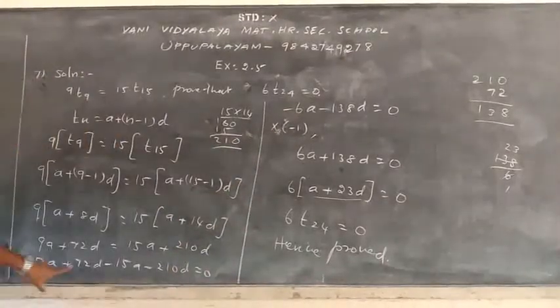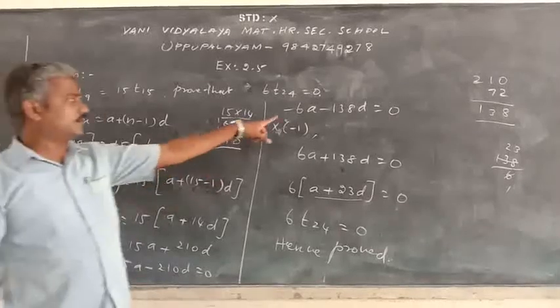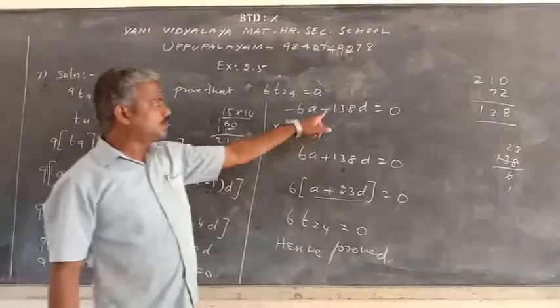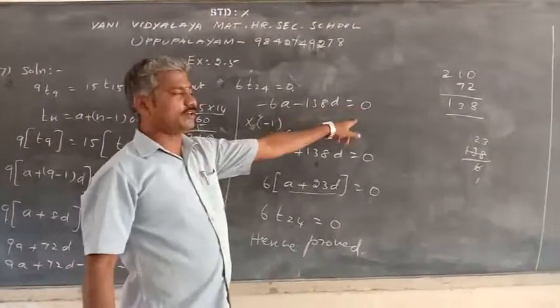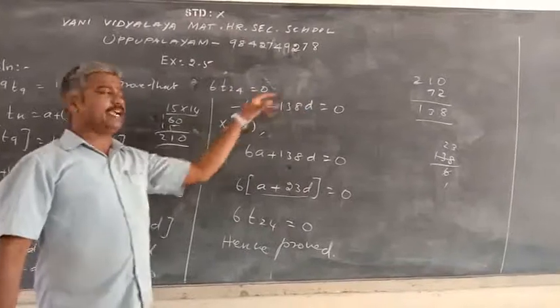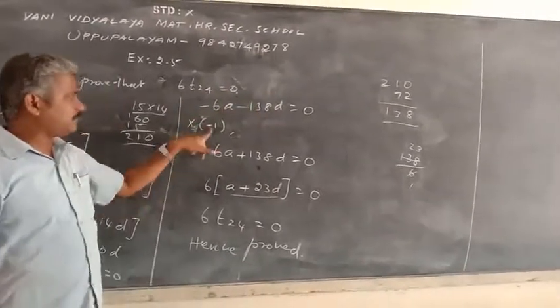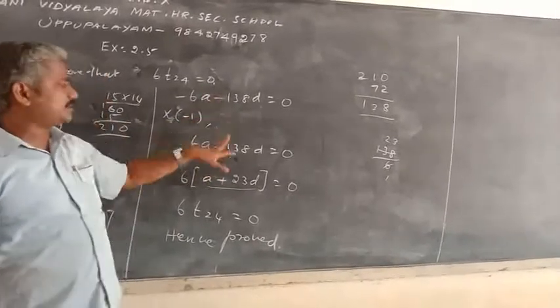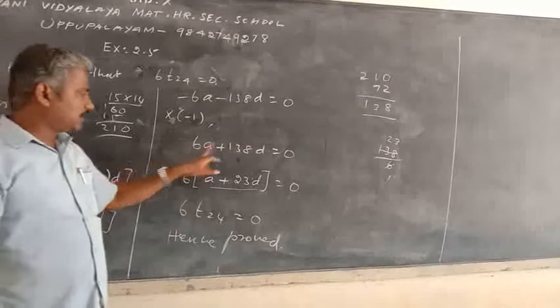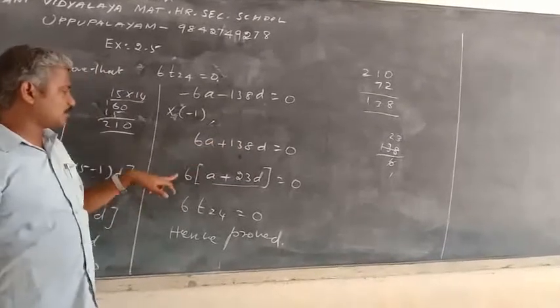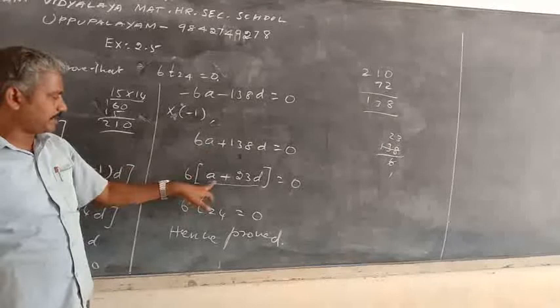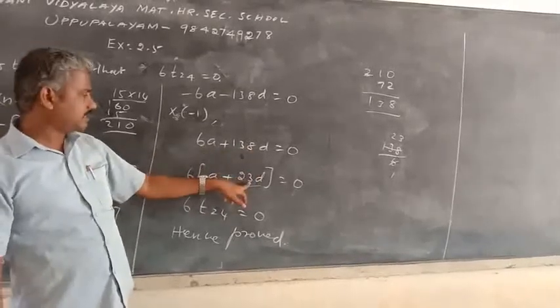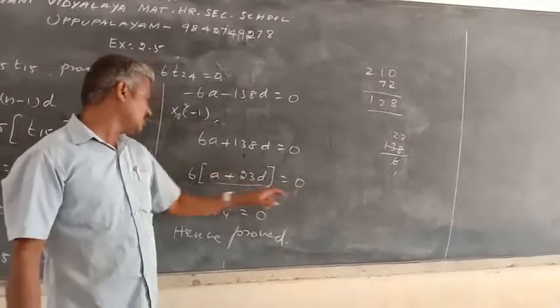So 9A minus 15A is equal to minus 6A. 72D minus 210D is equal to minus 138D is equal to 0. Total term multiplied by minus 1. So minus into minus plus, second minus into plus. So the total 6 common, 6 common offset, A plus 2, 6 are 12, value 1, 18, 3, 6 are 18. So 23D is equal to 0.